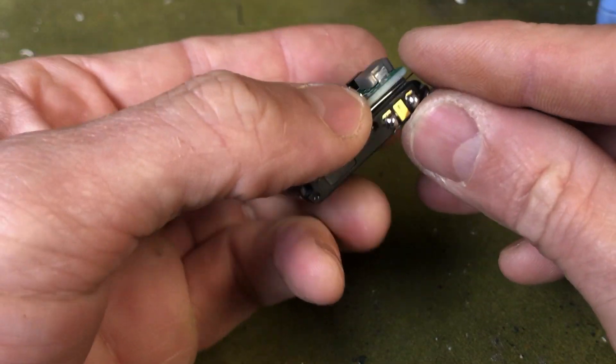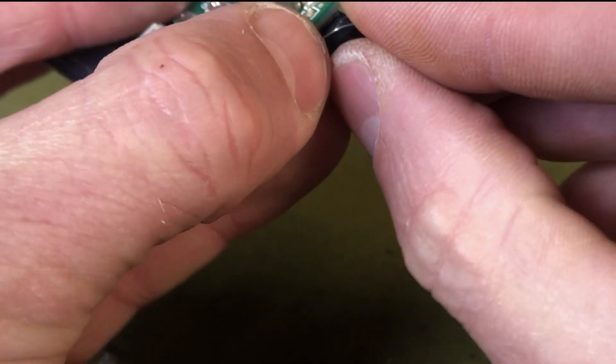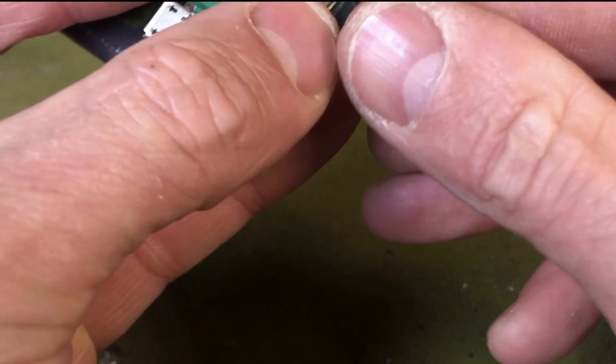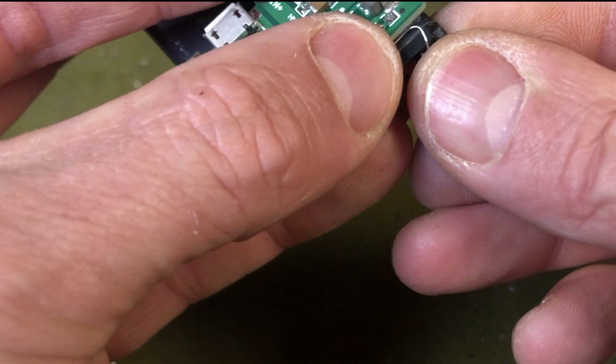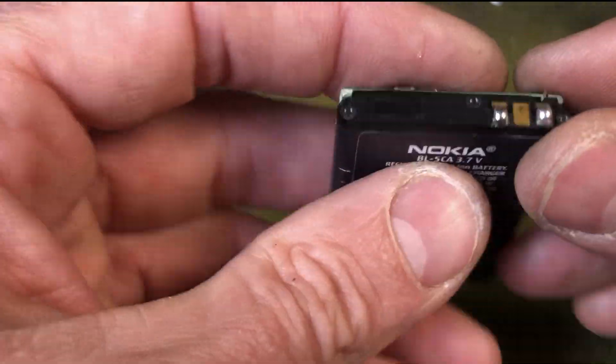And then you can see me just bending this leg over and now connect that to the positive on the battery. Probably should have used some pliers to get better bends here, but that's fine, it worked okay.